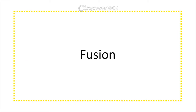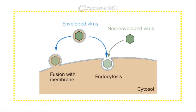Fusion is the process that enveloped viruses can use to enter a cell, where the viral envelope melts into the membrane of the host and the contents are released inside the cell. Enveloped viruses can also do endocytosis, along with non-enveloped viruses, where they push their way through the membrane and must uncoat later.